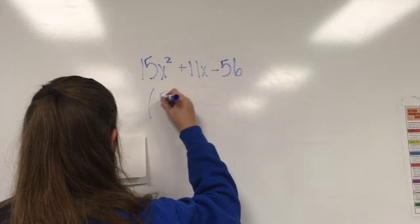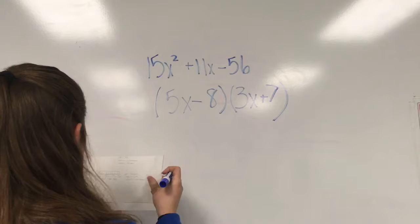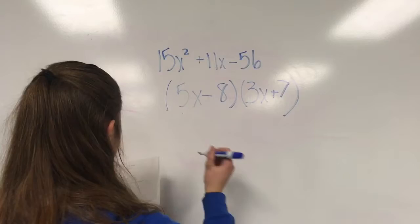First, we're going to start with 5x minus 8 times 3x plus 7. Now that we have this, we're going to check and see if our answer is correct.